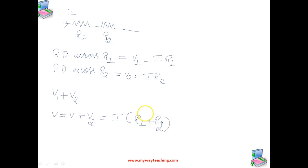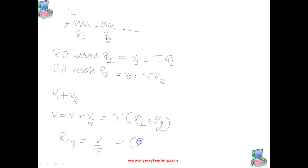This is as if the combination had an equivalent resistance R_equivalent. So we can write R_equivalent = V/I = R1 + R2. The equivalent resistance here is R1 + R2.